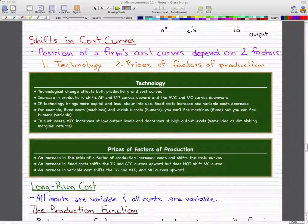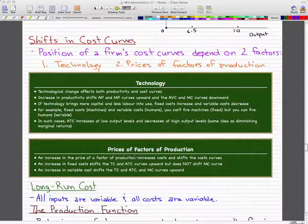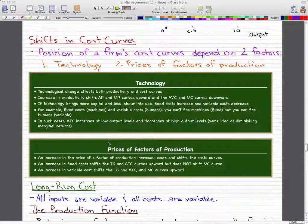Regarding prices of factors of production: an increase in the price of a factor of production increases costs and shifts the cost curves. An increase in fixed costs shifts the total cost and average total cost curves upward but does not shift the marginal cost curve. An increase in variable costs shifts the total cost, average total cost, and MC curves upward.